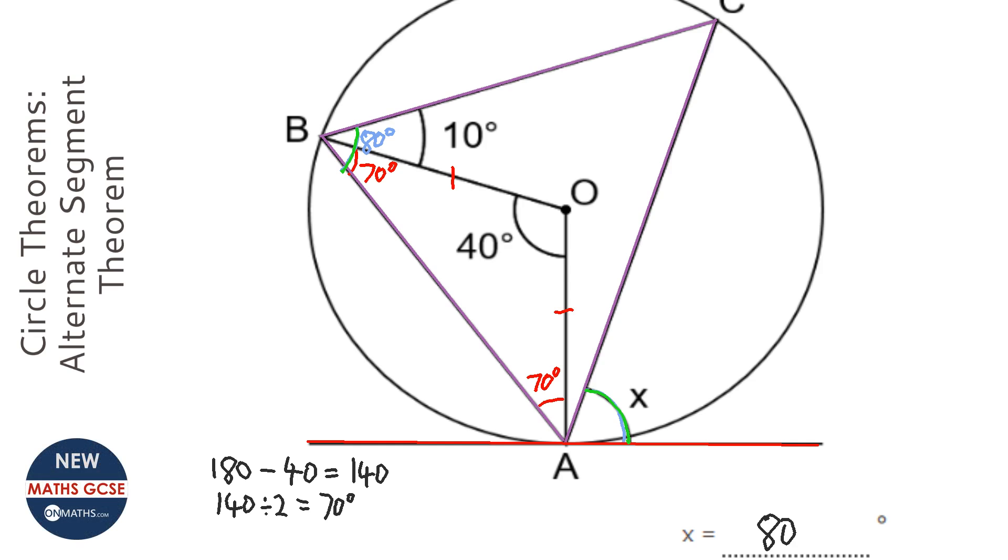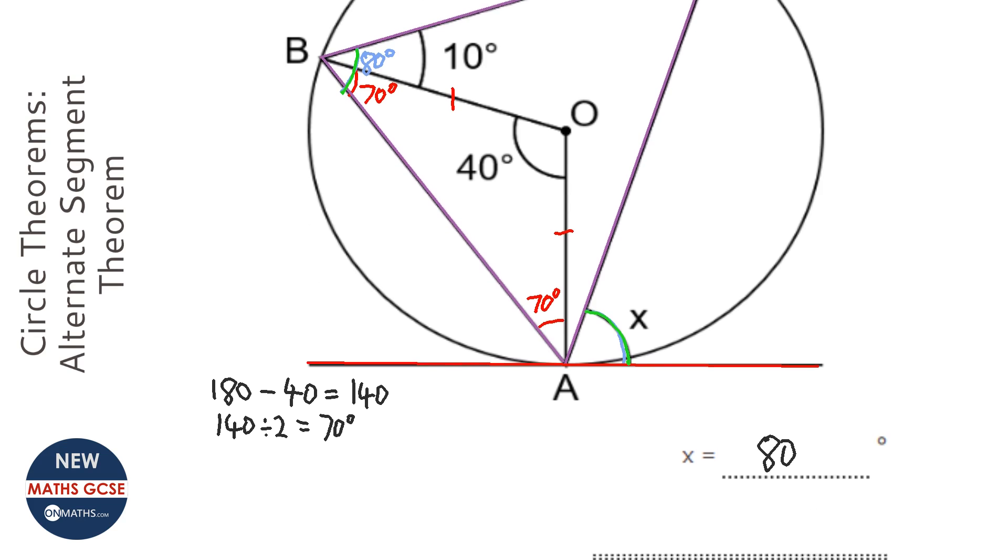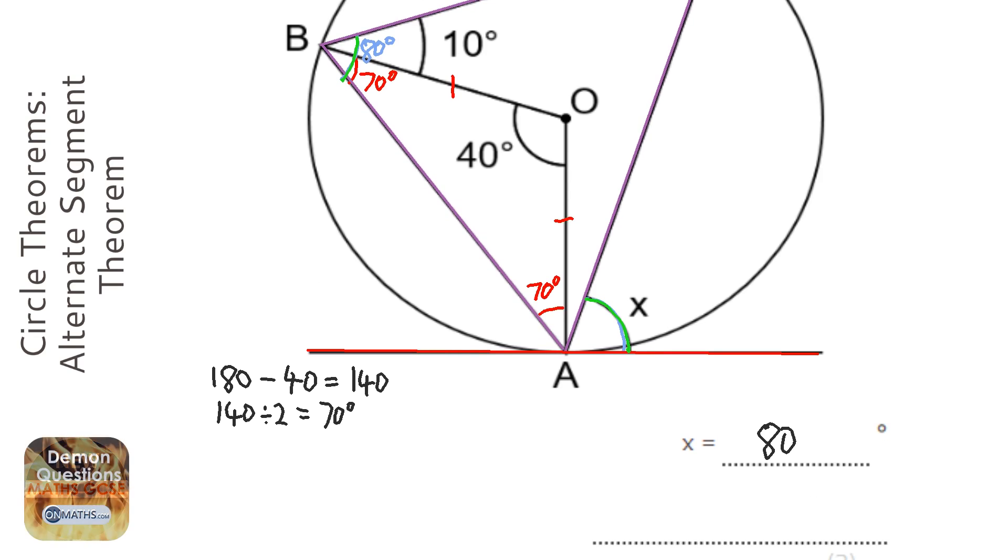But the good thing about this circle theorem is you just need to write down three words: alternate segment theorem. The mark scheme will always just be those three words, so don't try and write a different explanation. It will just have those three words.